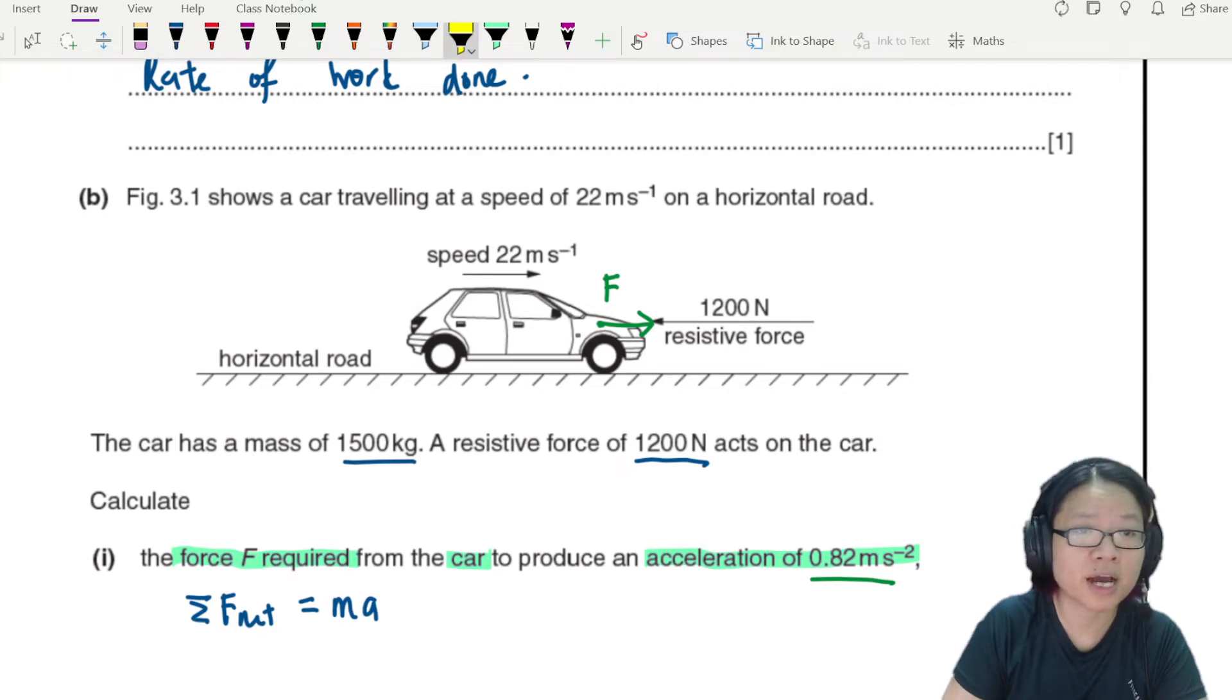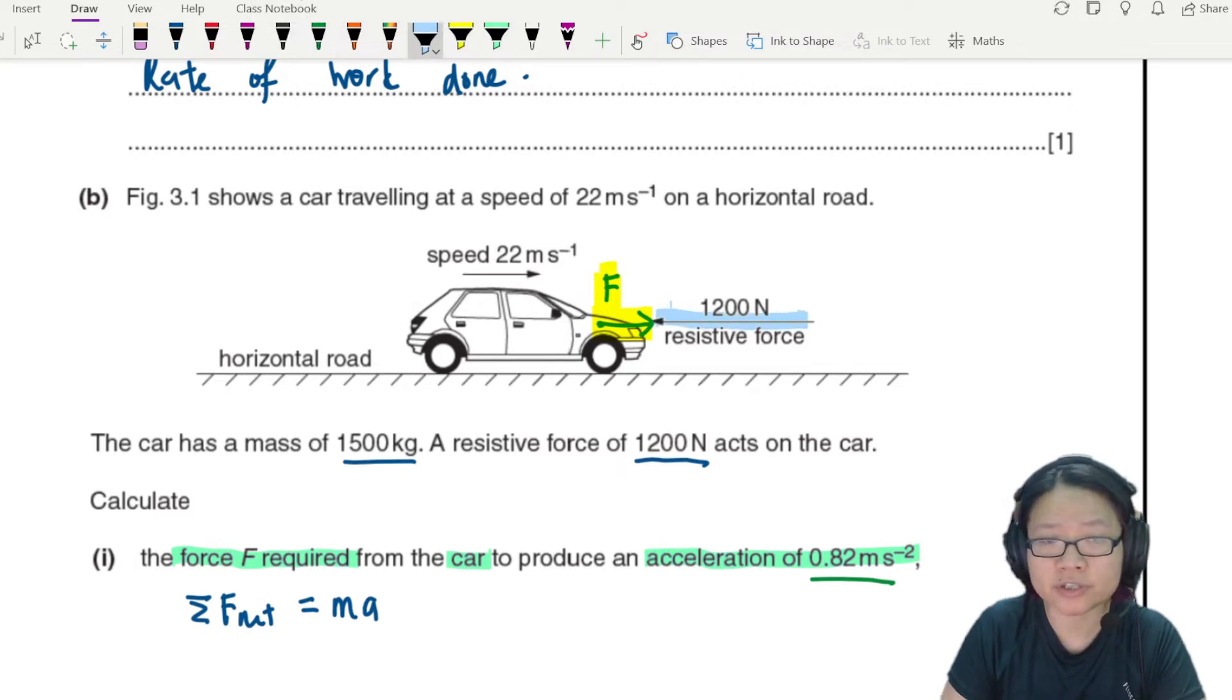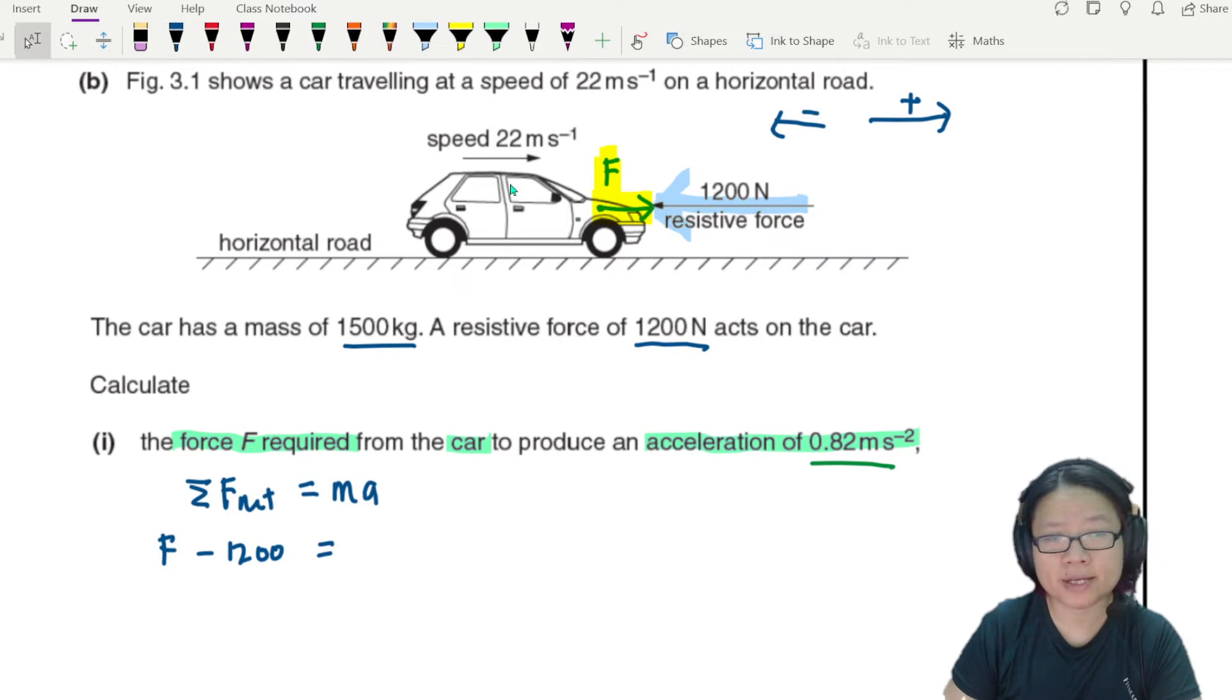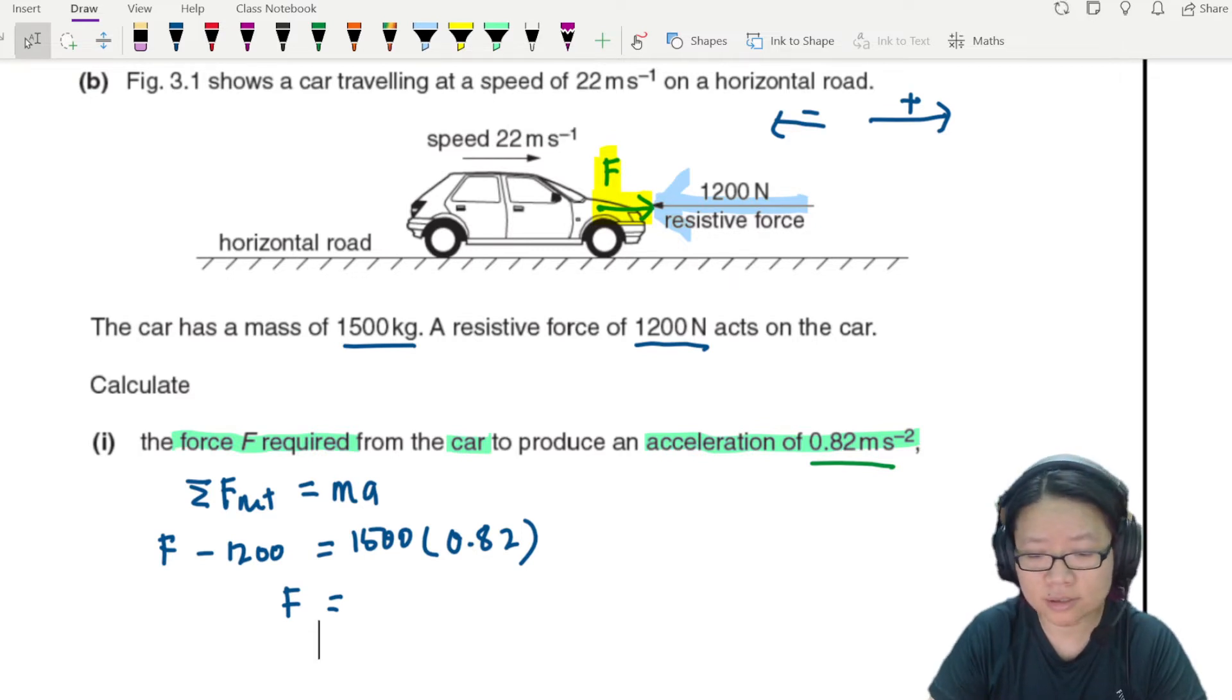What are the forces acting on the car? You have your forward facing force of the engine and you also have this backward resistive forces pushing back. So resistive force pushing back and I will now take F minus 1200, because I will take this direction to the right as positive and to the left as negative. So F minus 1200 equals MA. The mass is 1500 and we want it to accelerate at 0.82 meter per second squared. If we press our calculator this should give us an answer of